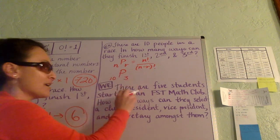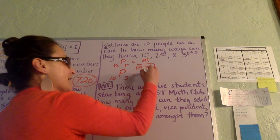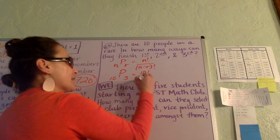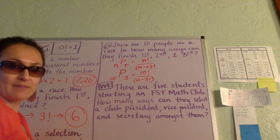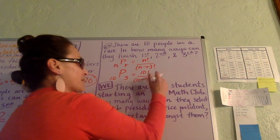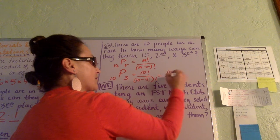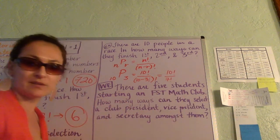10 permutation of 3. Using our formula, that's 10 factorial over (10 minus 3) factorial, which is 10 factorial over 7 factorial.